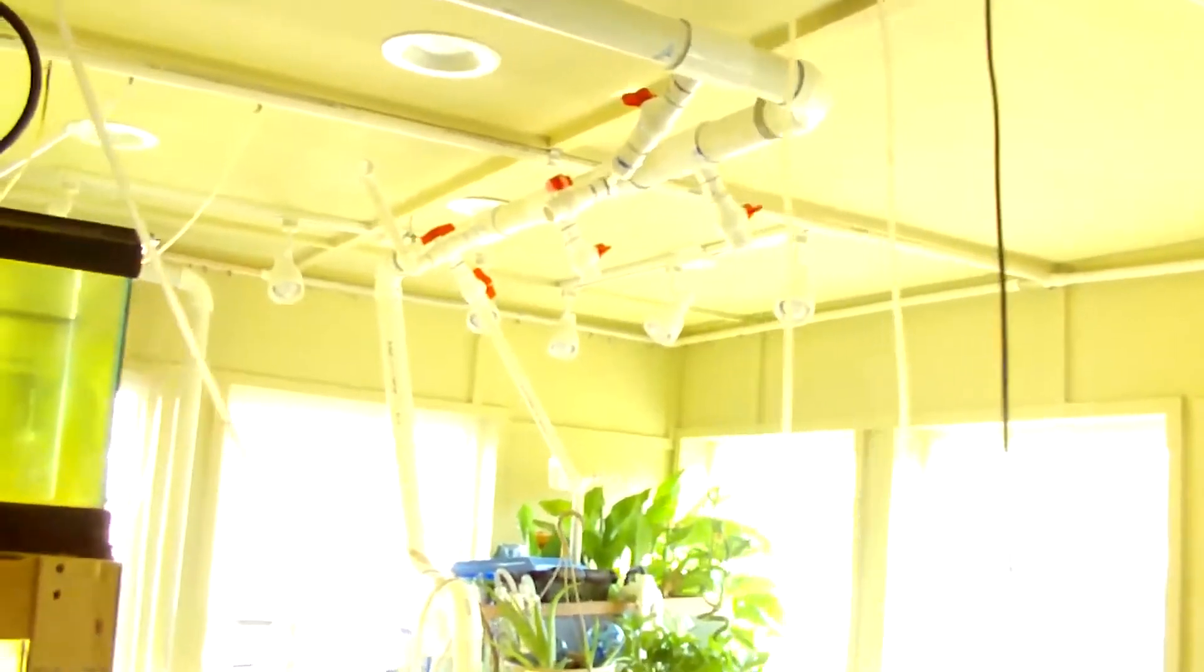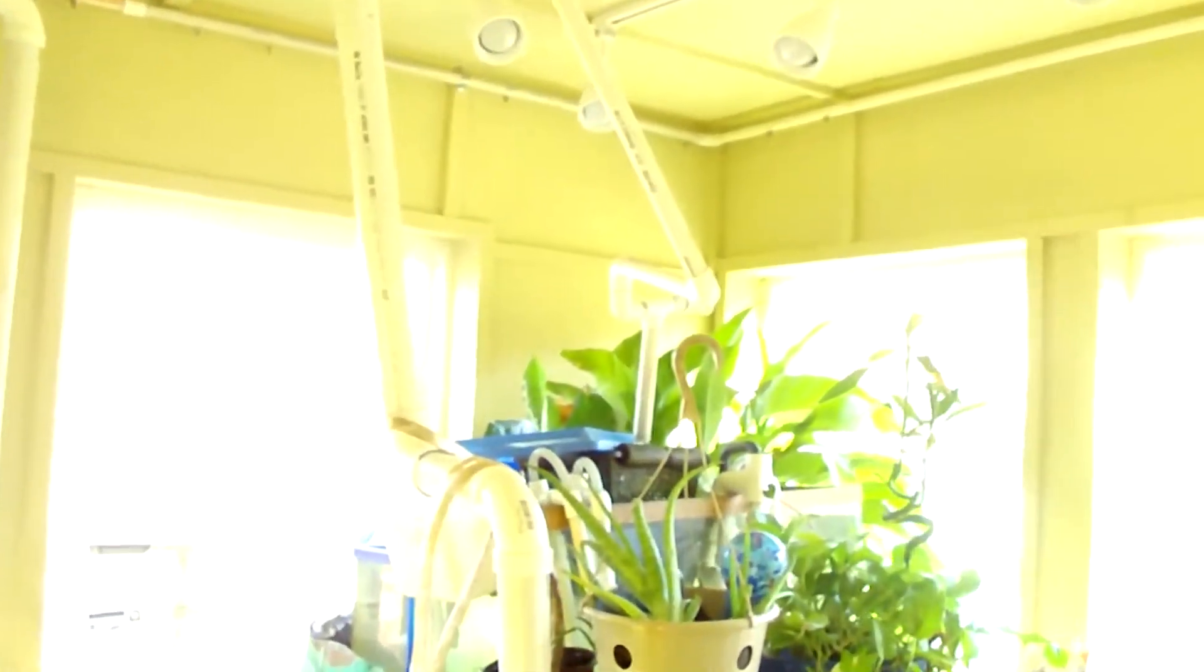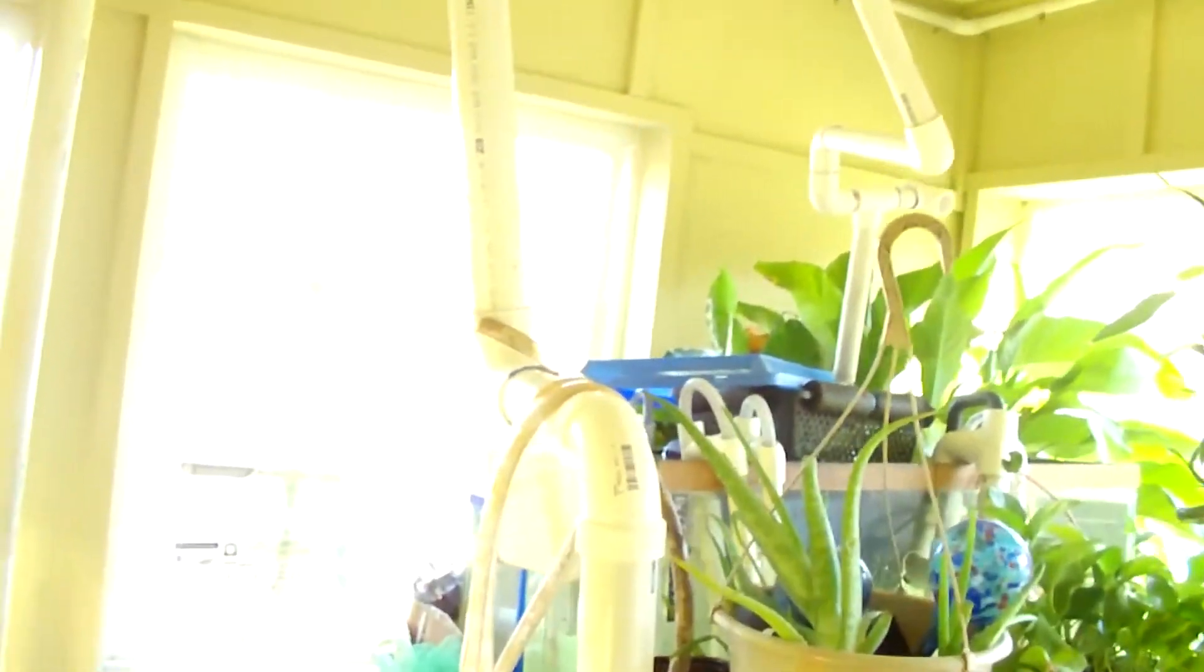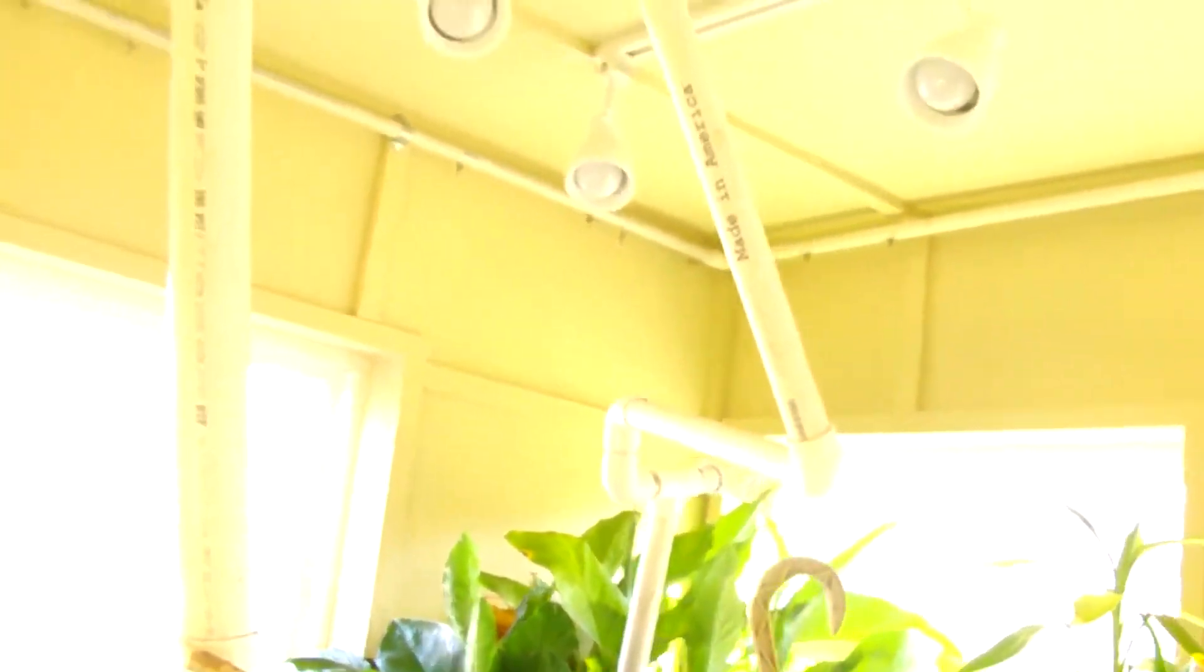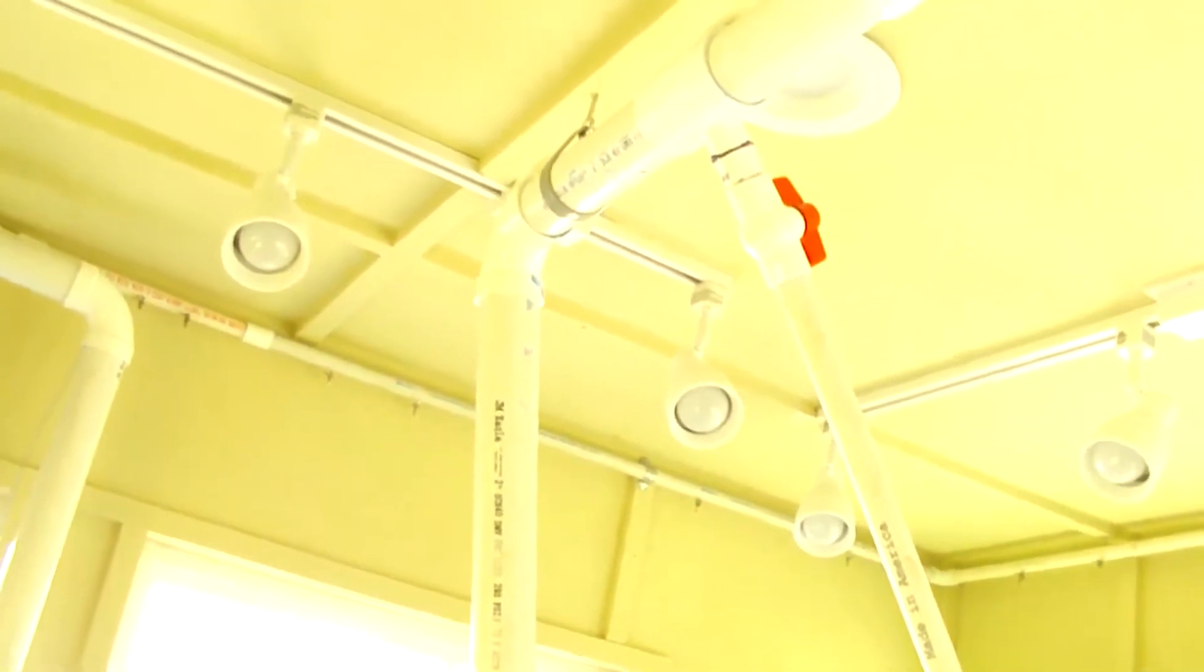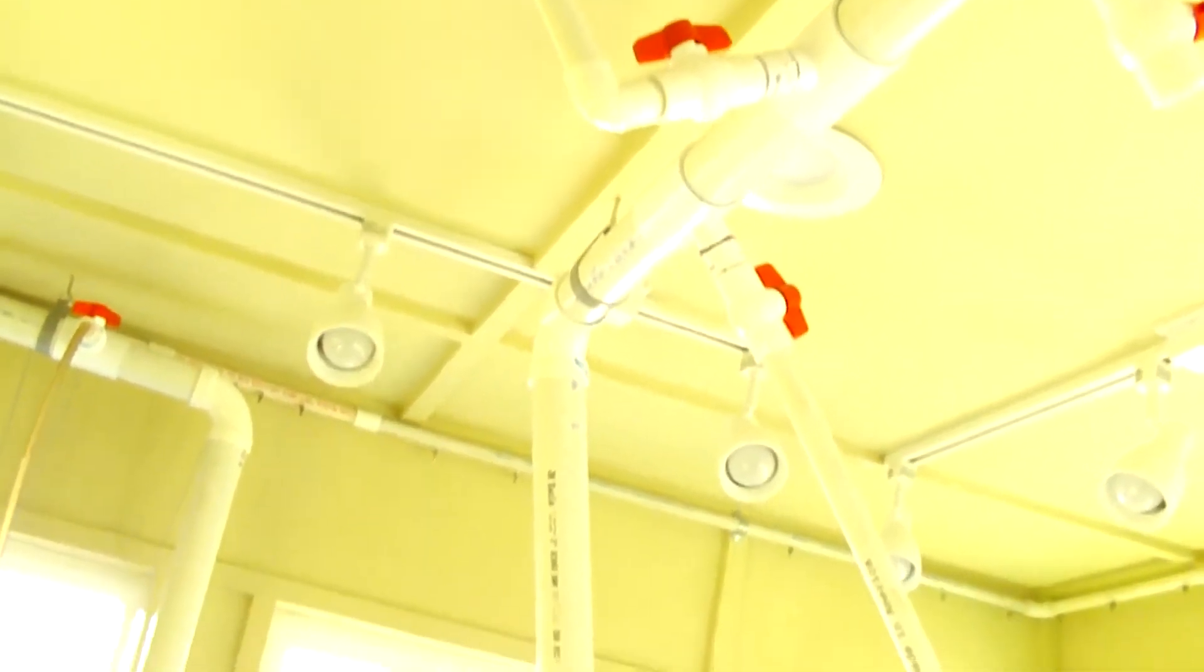and then dumps back into the grow bed right here of the IVC tote. That's right on top, so that's where the water is coming out. Again, I can adjust that flow. And then the big 2 inch PVC, that's the excess of the water, and that goes straight back to the sump. I have that right there.